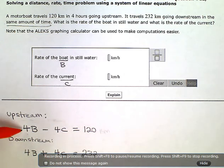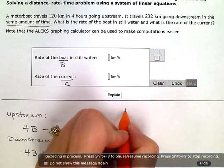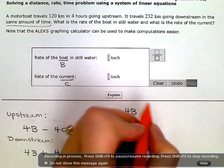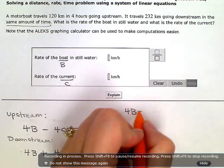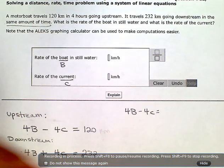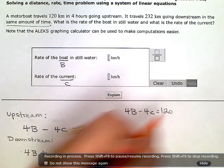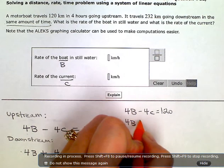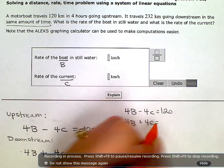Now I have my system of equations, and it's set up to do elimination, so that's how I'm going to go ahead and solve it here. So I have 4B minus 4C equals 120, and then 4B plus 4C equals 232.